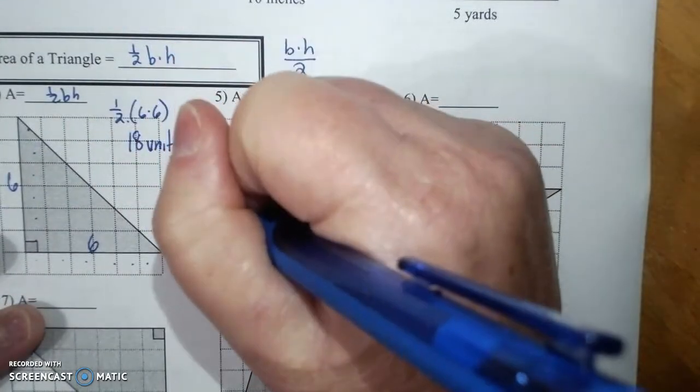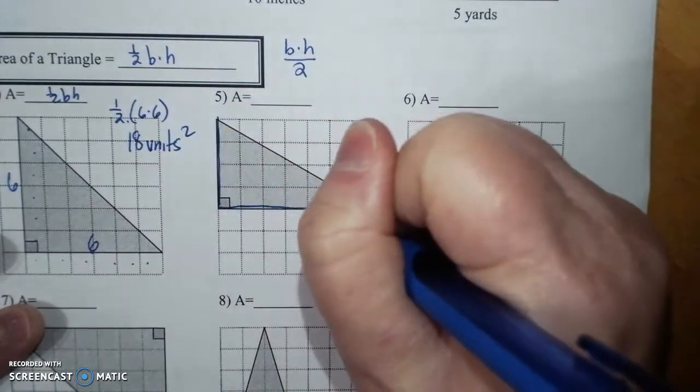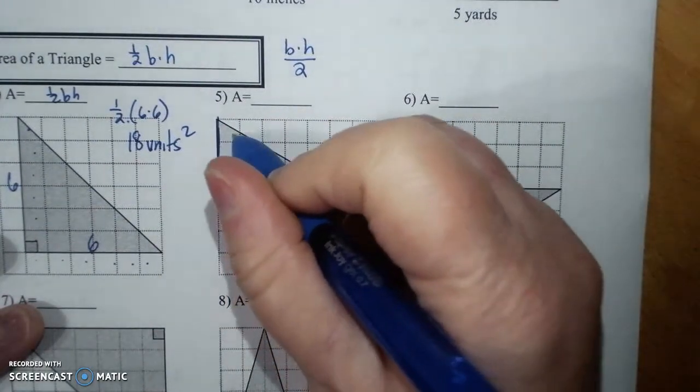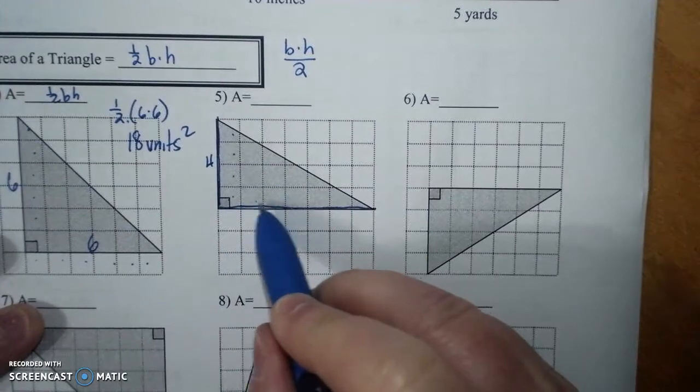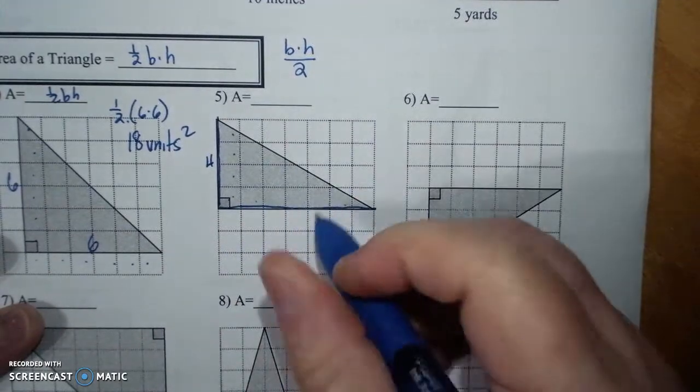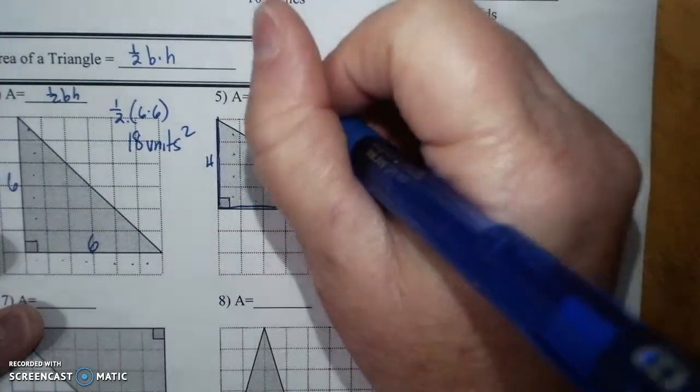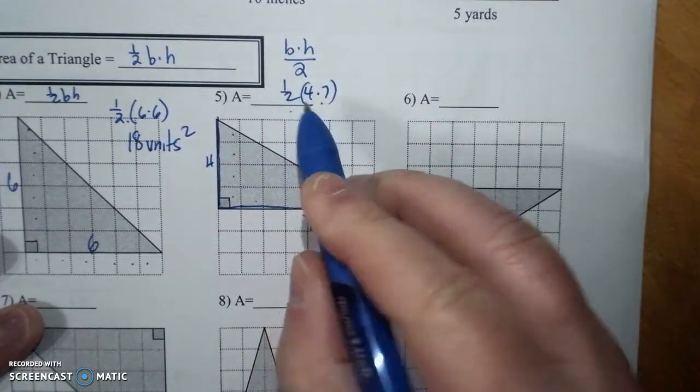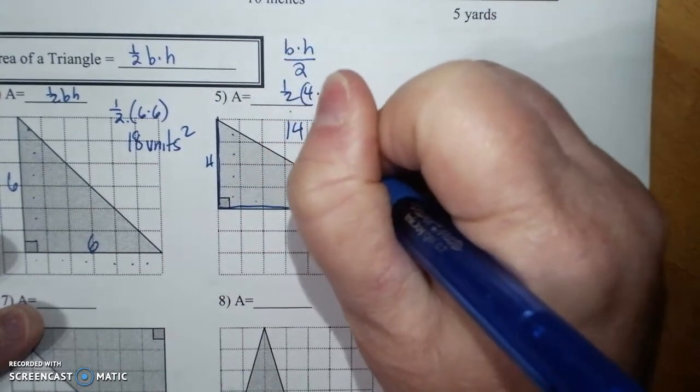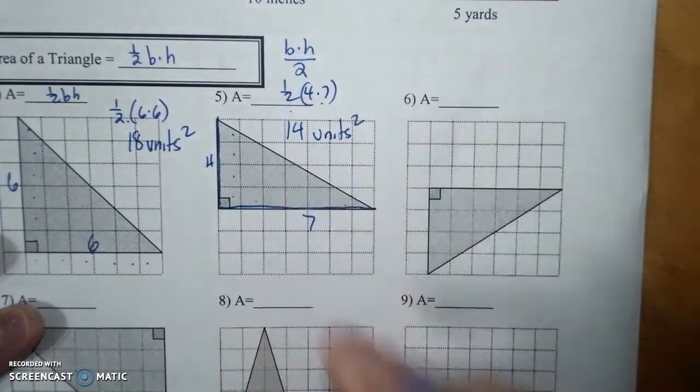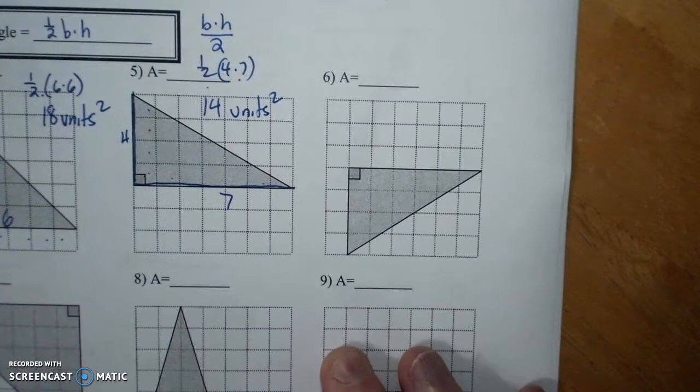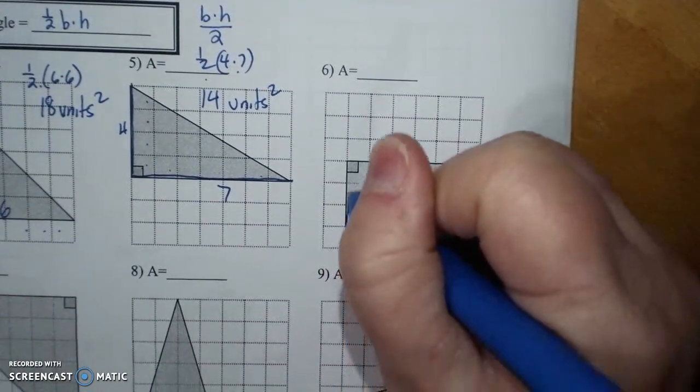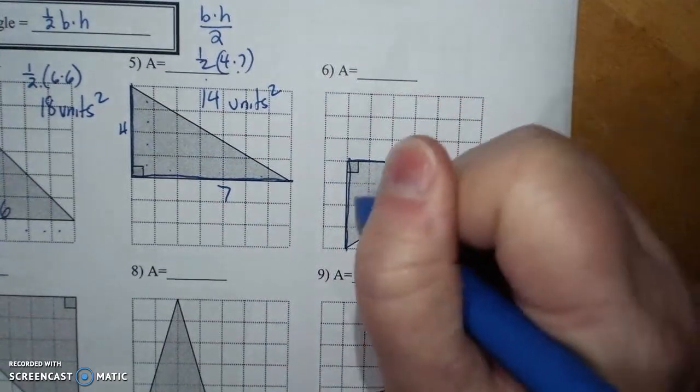On right triangles, it's the legs of the right triangle. So, it's one, two, three, four. One, two, three, four, five, six, seven. One half of four times seven. One half of 28, which is 14 units squared. Right triangles are the legs. The base and the height are the legs.